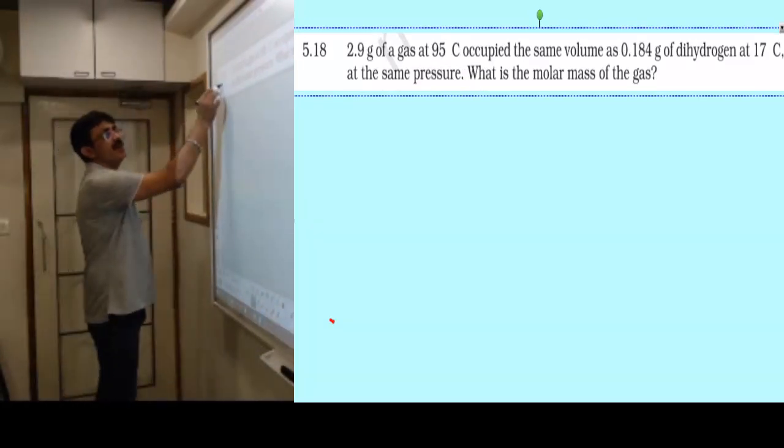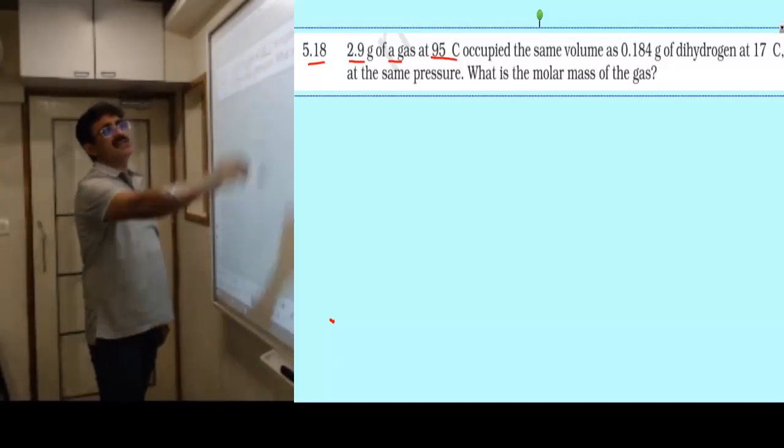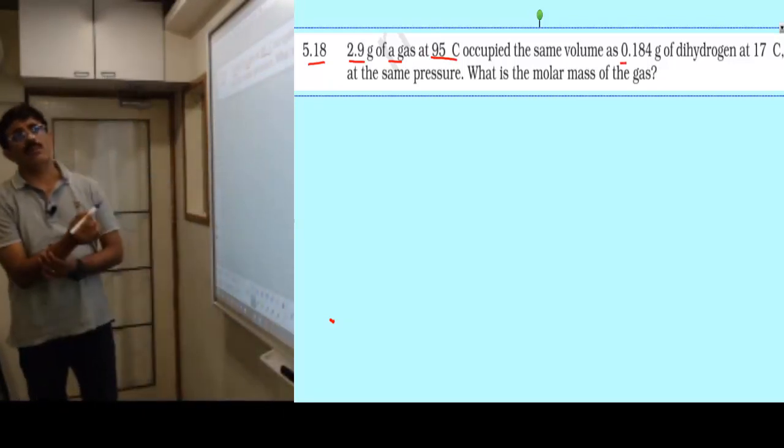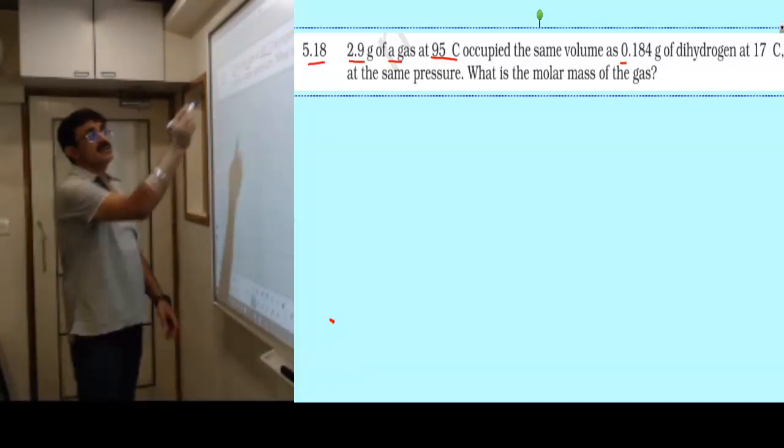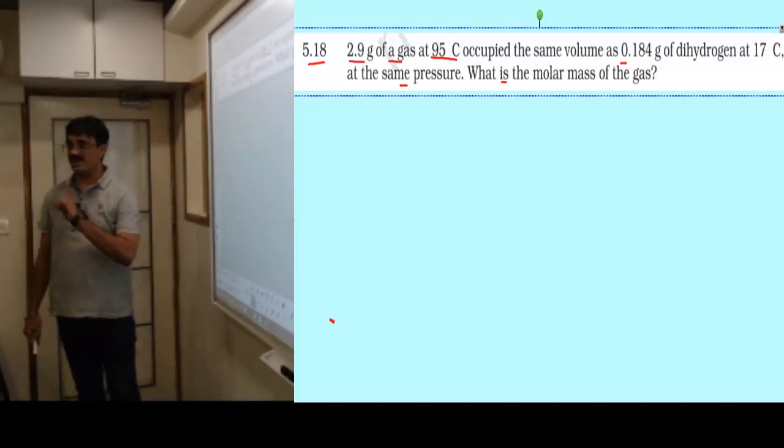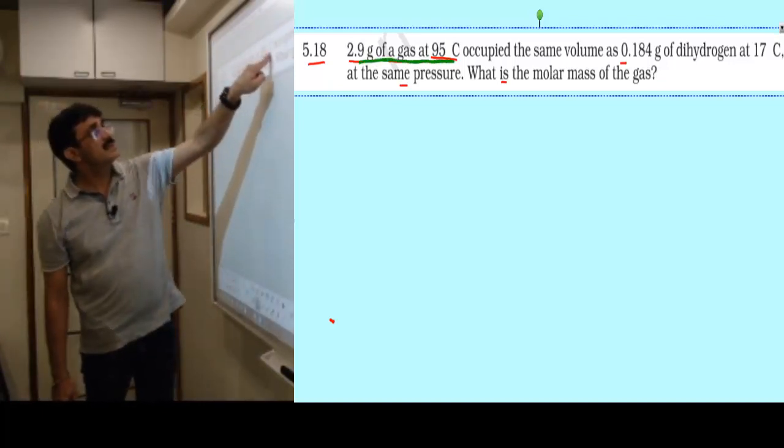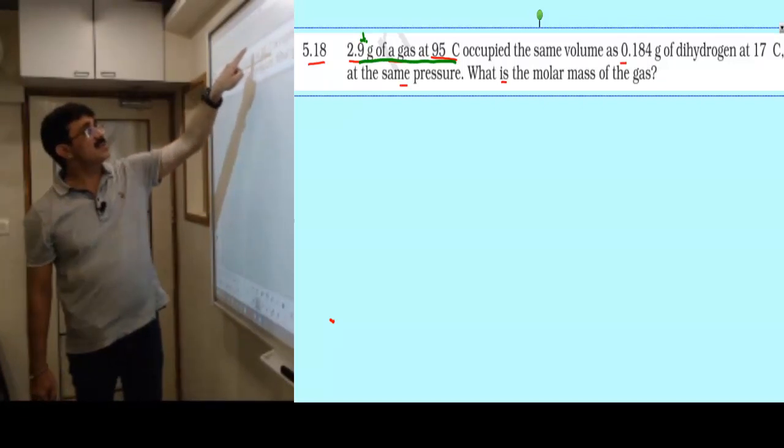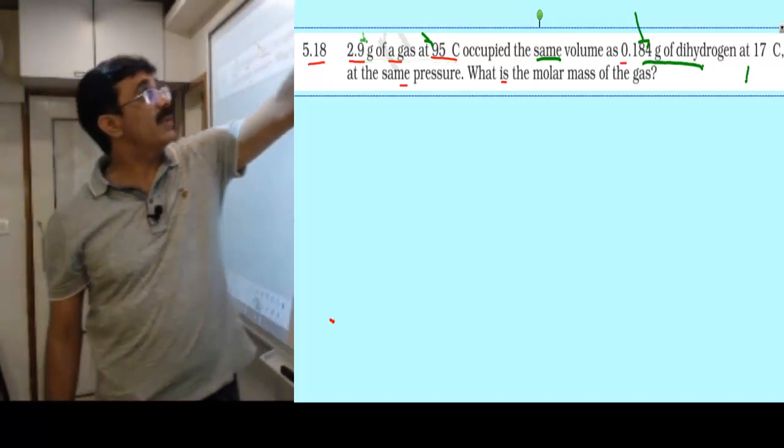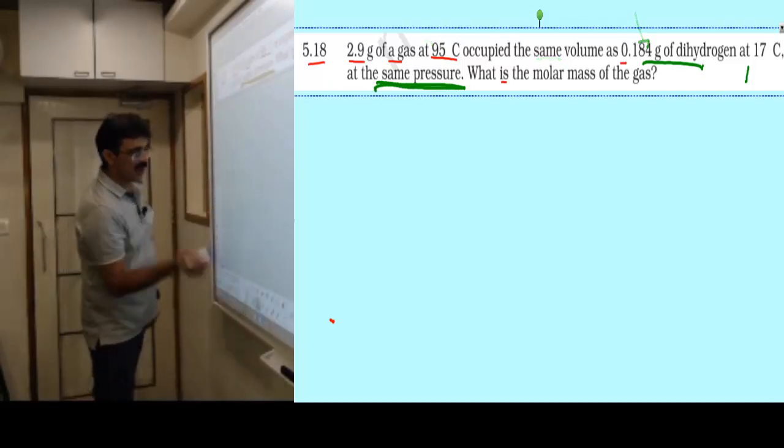Question 5.18: 2.9 gram of a gas - we do not know which gas - at 95 degree Celsius occupied the same volume as 0.184 gram of dihydrogen gas at 17 degree Celsius and the same pressure. What is the molar mass of the gas? This time they have given two different gases: one is unknown gas, and second is hydrogen.